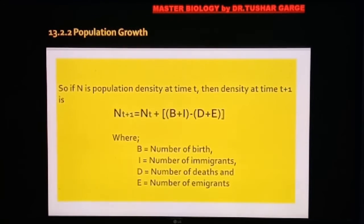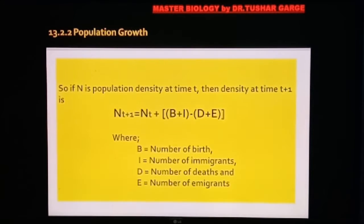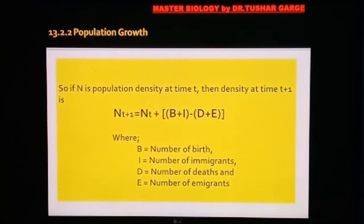If N is the population density at time t, then density at time t+1 will be: N(t+1) = N(t) + [(B + I) − (D + E)], where B is number of births (natality), I is number of immigrants, D is number of deaths, and E is number of emigrants.